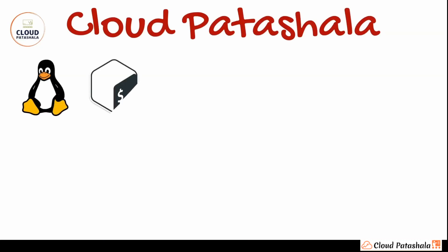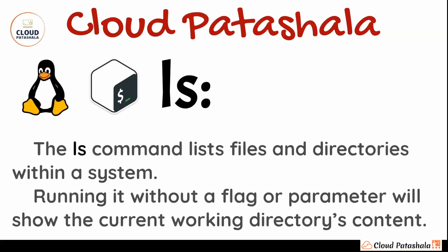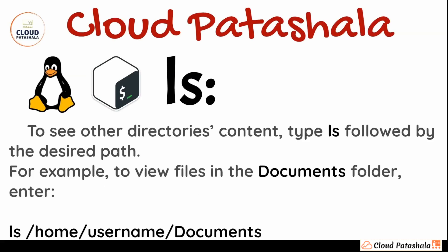Let's start by looking into the first command, which is ls. ls is used for listing the files and directories in our system. Running it without a flag or parameter will show the current working directory contents. To see other directories' contents, type ls followed by the desired path — for example, ls /home/username/documents would list all files and subdirectories inside the documents folder.